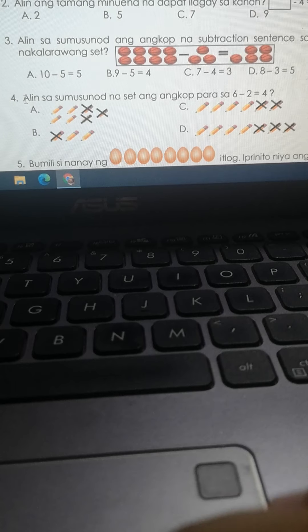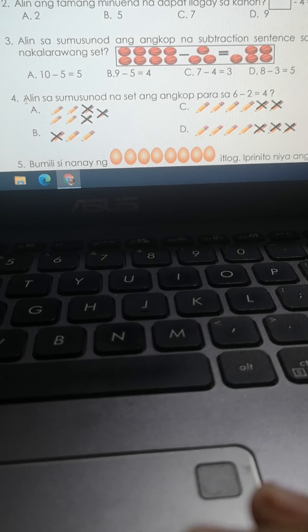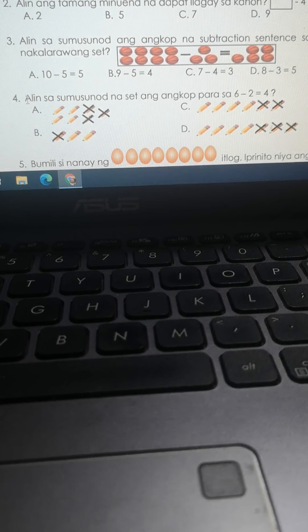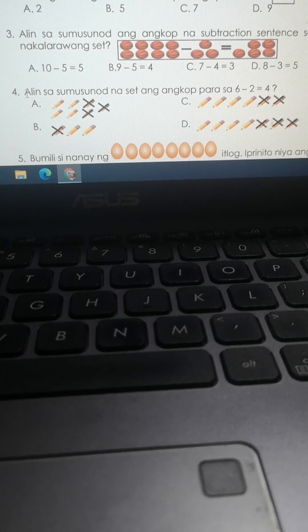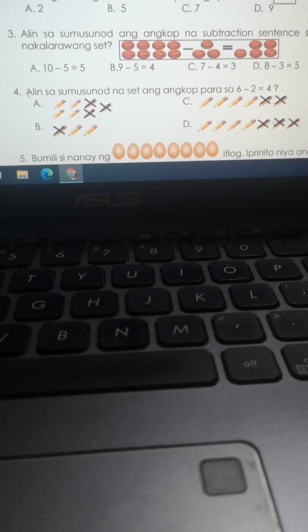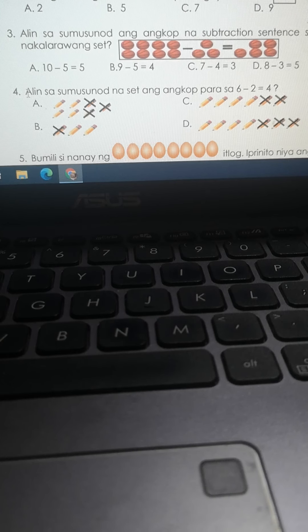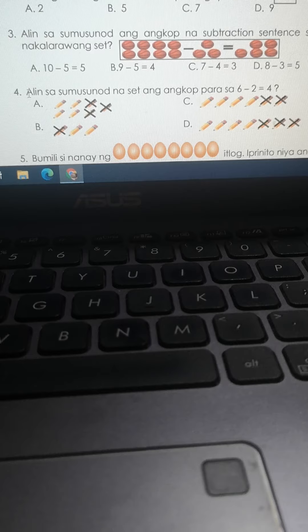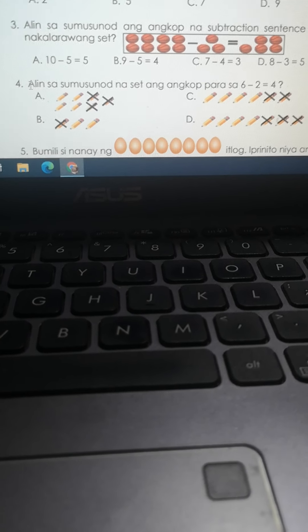The language is Tagalog, so sorry I will speak Tagalog. So you read: Alin sa sumusunod na set ang angkop para sa 6 minus 2 equals 4? Now continue back to English.